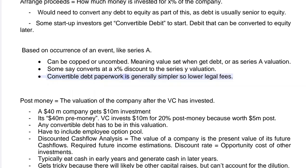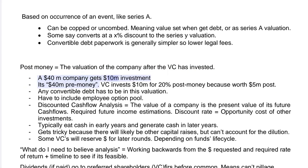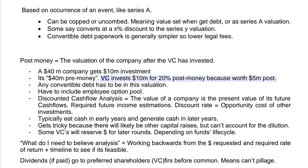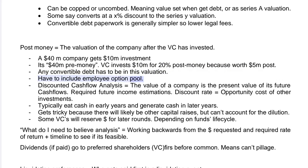Convertible debt paperwork is generally simpler, so it incurs lower legal fees. Post-money refers to the valuation of the company after the VC has invested. For example, a company with a $40 million pre-money valuation gets a $10 million investment, making it worth $50 million post-money — the VC invests $10 million for 20%. Any convertible debt and the employee option pool must be included in this valuation.